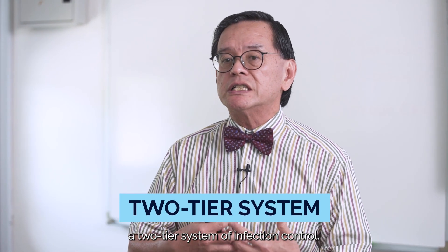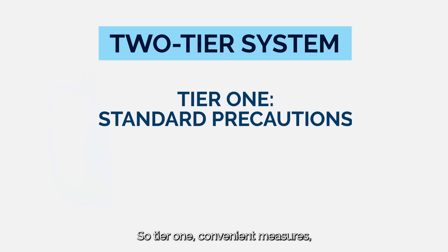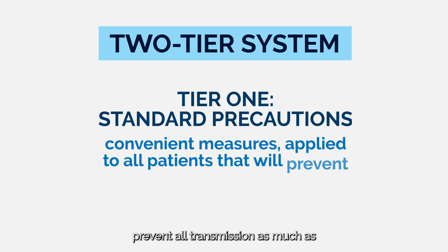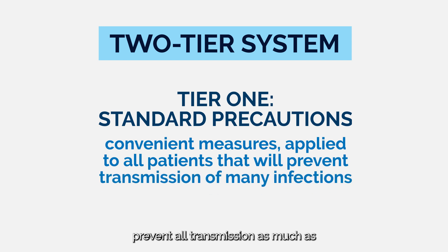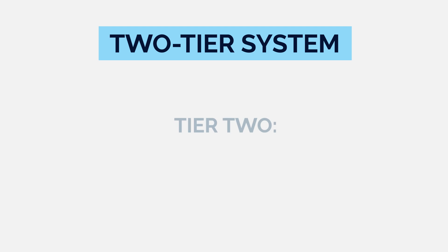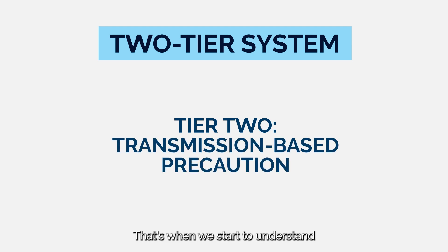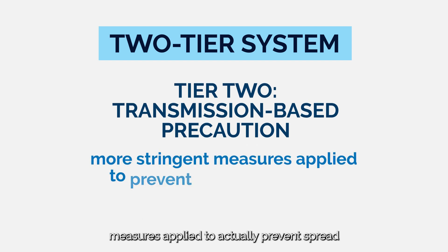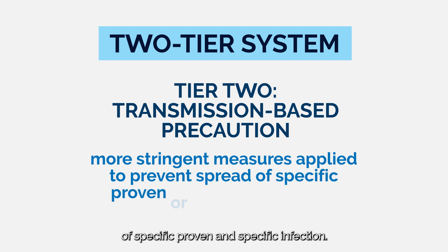In practice, we call this a two-tier system of infection control. Tier one consists of standard measures applied to all patients to prevent all transmission as much as possible in the hospital setting. Transmission-based precautions — tier two — is when we understand how a specific transmission occurs and apply more stringent measures to prevent the spread of a specific proven infection.